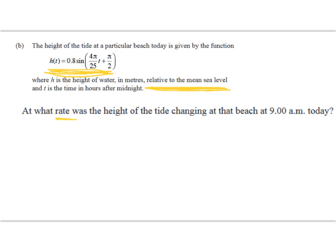At what rate was the height of the tide changing at that beach at 9am today? So we're asked to find h'(t), and then we're going to substitute in t = 9 because it's the time in hours after midnight. So it's a trig plus chain rule derivative. I'll just change the pen color to something better.